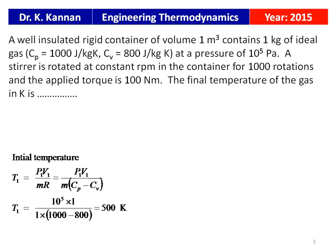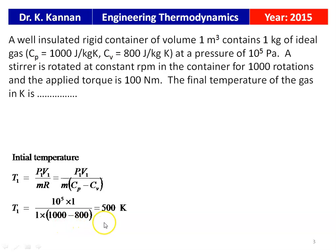The initial temperature T1 = P1V1 / (M·R), from the perfect gas equation. So P1V1 / (M × R), where R = CP − CV. Thus T1 = (10^5 × 1) / (1 × (1000 − 800)) = 10^5 / 200 = 500 Kelvin.